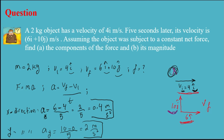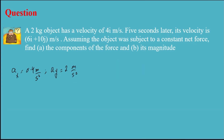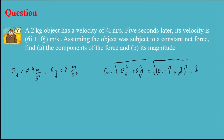Now I have acceleration in both the x and y directions, so I can find the magnitude. The magnitude of acceleration equals the square root of ax squared plus ay squared — that is the square root of 0.4 squared plus 2 squared — which equals approximately 2 meters per second squared.